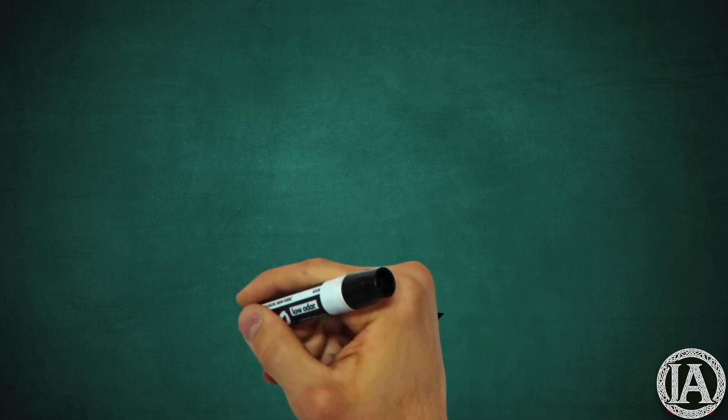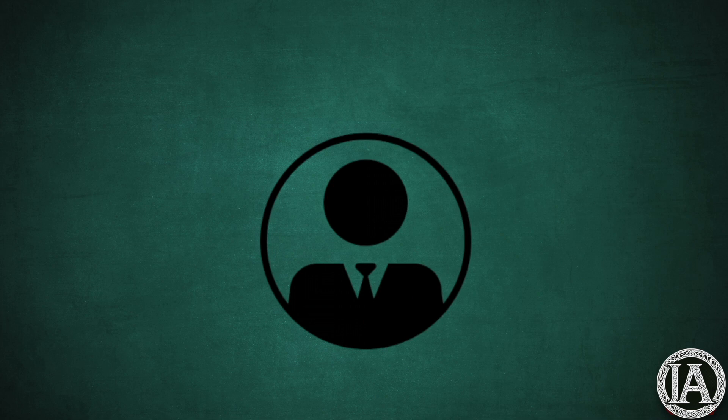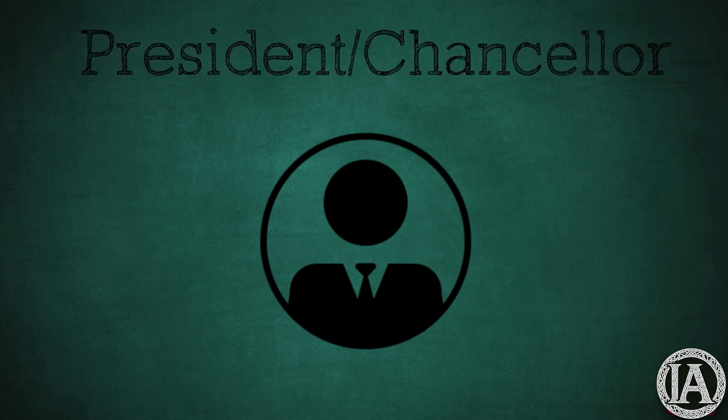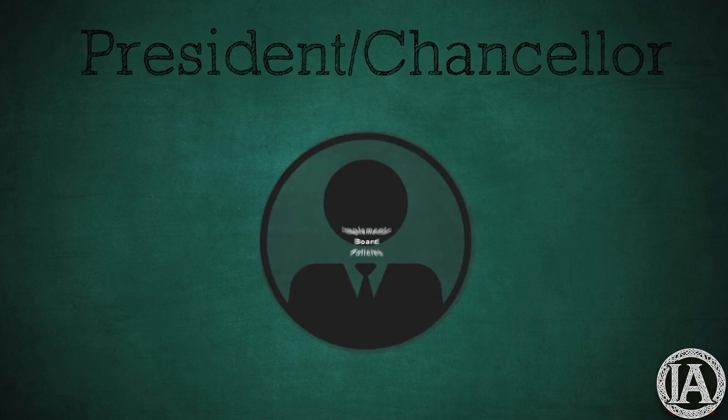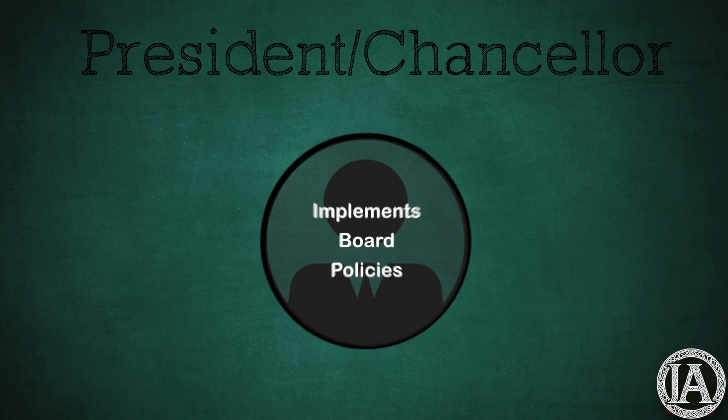The chief executive officer at colleges and universities is the president or chancellor. This individual ensures that the policies of the governing board are implemented while working with stakeholders such as faculty and students to facilitate the academic program of the institution.